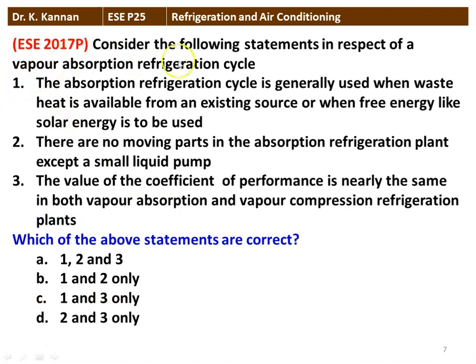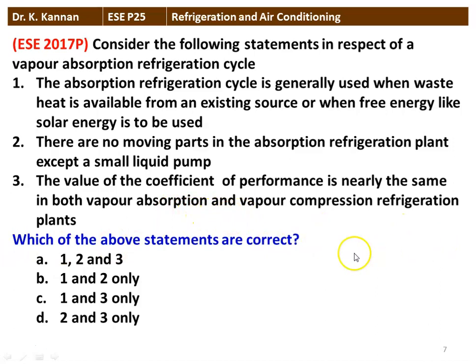The next question from the 2017 question paper: consider statements on the vapor absorption refrigeration cycle. Statement one — the absorption refrigeration cycle is generally used when waste heat or free energy like solar energy is available. Statement two — there are no moving parts in the absorption refrigeration plant except a small liquid pump. Statement three — the COP is nearly the same in both vapor absorption and vapor compression refrigeration systems. Only statements one and two are correct; statement three is not correct.